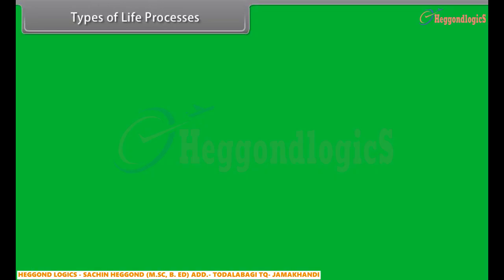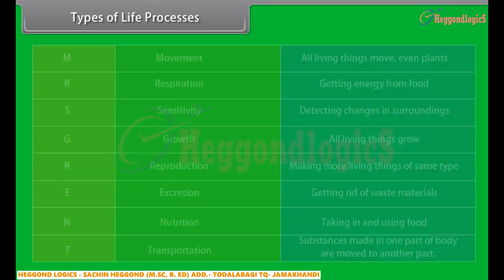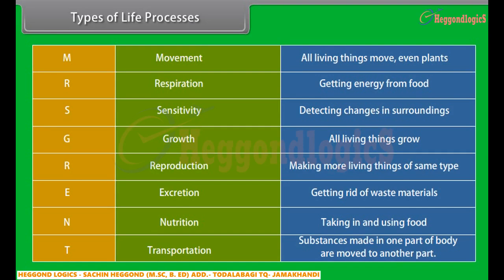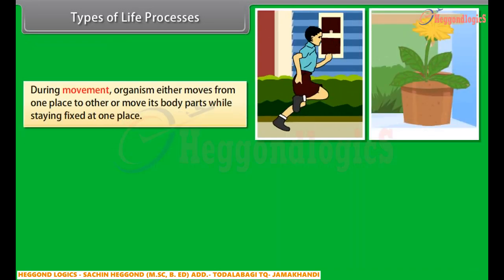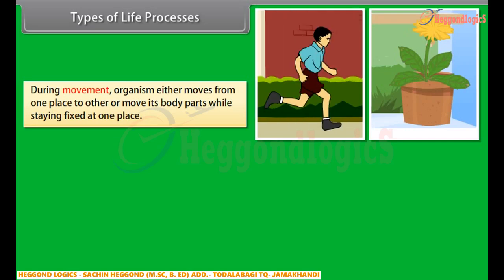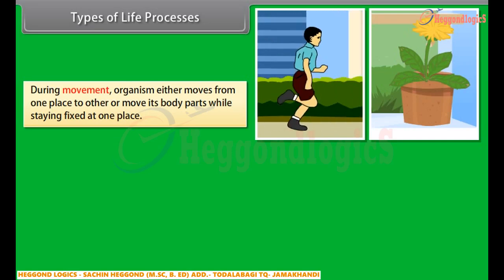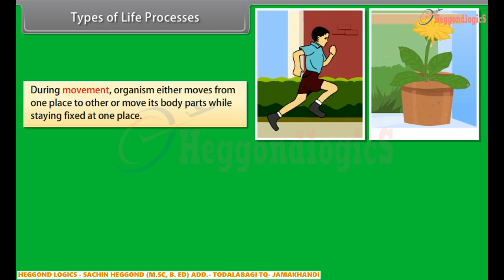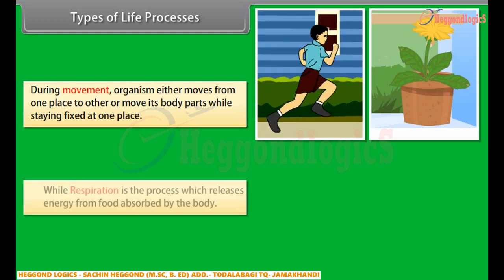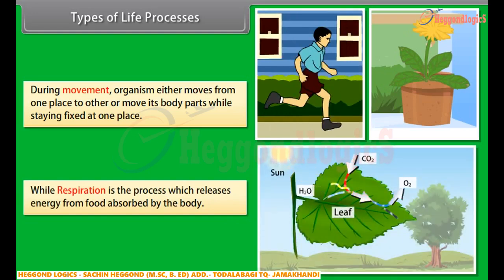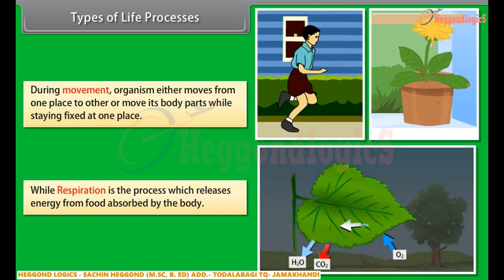There are the following basic life processes: movement, respiration, sensitivity, growth, reproduction, excretion, nutrition, and transportation. During movement, an organism either moves from one place to another or moves its body parts while staying fixed at one place. Respiration is the process which releases energy from food absorbed by the body.